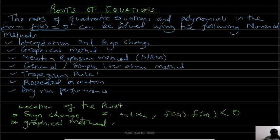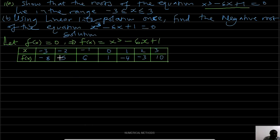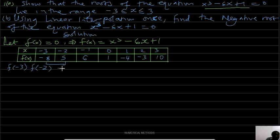By sign change: if f(x1) × f(x2) < 0, there is a root between x1 and x2. We observe sign change between -3 and -2: f(-3) × f(-2) = -8 × 5 = -40, which is less than 0. This means there is a root between -3 and -2.